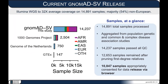In the current gnomAD SV release — a catalog of structural variants from genome sequencing — we include 14,891 samples, a majority of which are non-European. You can see the breakdown in the bar chart on the left compared to other SV resources like the 1000 Genomes Project, Genome of the Netherlands, or the GTEx Project. When you go to the gnomAD website and browser, that is representing 10,847 unrelated individuals — a subset of the samples mentioned in the paper, but still over 10,000 samples of whole genome sequencing.